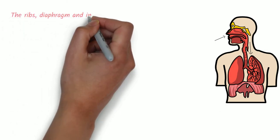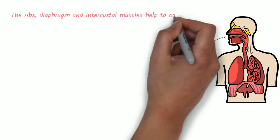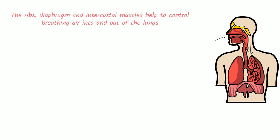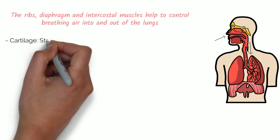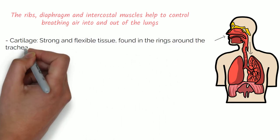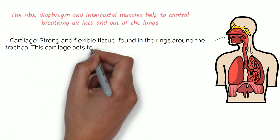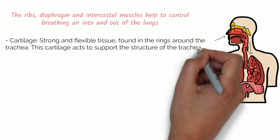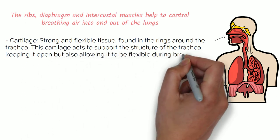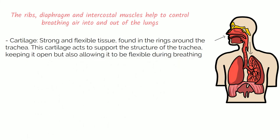The ribs, diaphragm and intercostal muscles help to control breathing air into and out of the lungs. Now let's cover the variety of tissues found within the respiratory system. Cartilage is a strong and flexible tissue found in various places in the body. It is found in rings around the trachea, acting to support the structure of the trachea — keeping it open while also allowing it to be flexible during breathing.